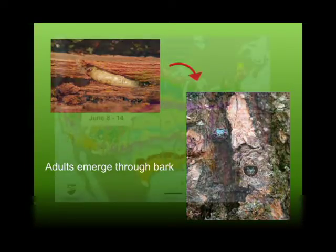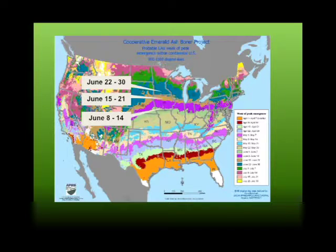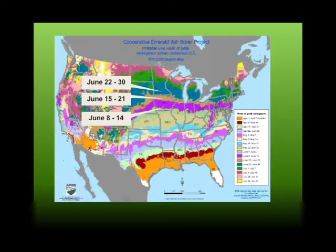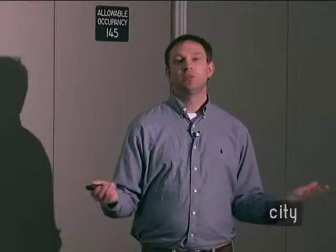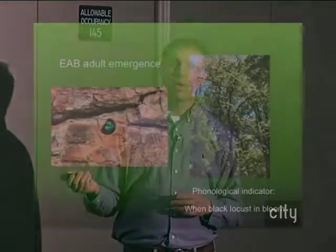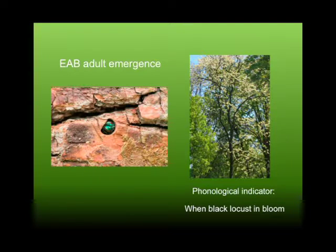To pinpoint when peak activity is, here in Iowa it's around mid-June when they're actively flying around. As seasons change from year to year, a good plant indicator we use is the black locust — when the black locust is in bloom is when EAB is out and present. If you're familiar with black locusts, you can always use that as an indicator plant.